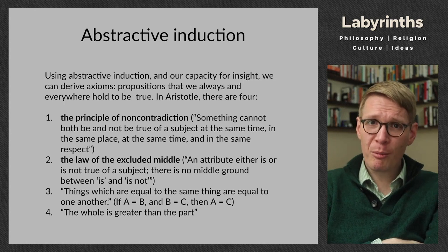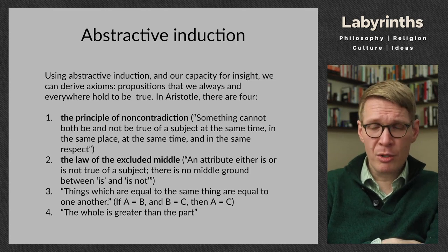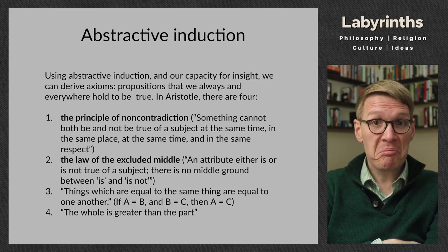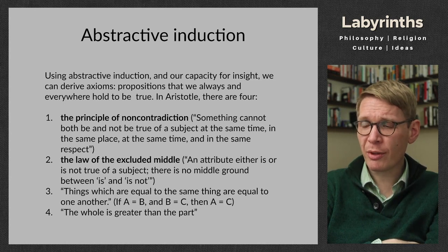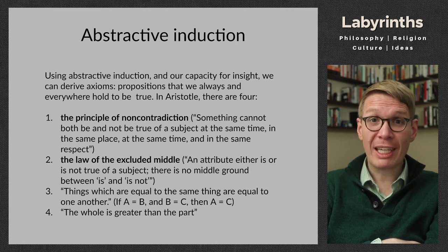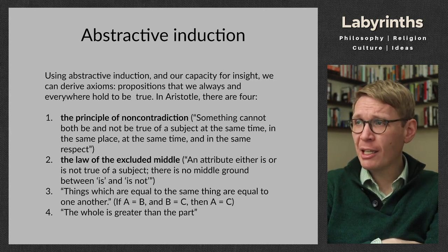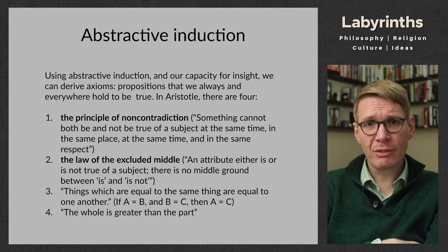The last two axioms don't have fancy names but also derive from Aristotle. Things which are equal to the same thing are equal to each other: if A is the same as B, and B is the same as C, then A is the same as C — a basic rule of inference. And finally, the whole is greater than the part: if I have a cake and cut a piece, that piece will be lesser in quantity than the whole cake. These four axiomatic propositions are things Aristotle and most of us take for granted as constituting clear thinking.